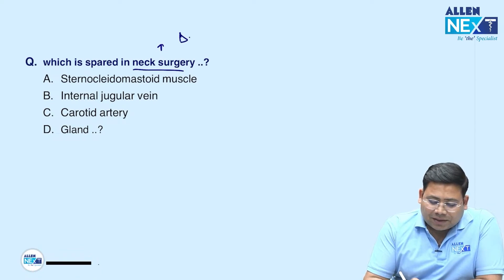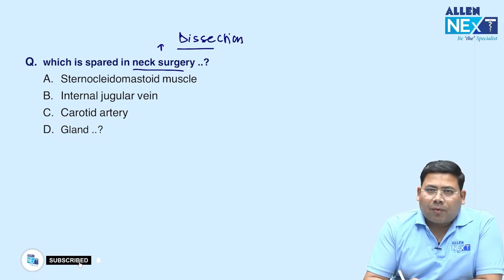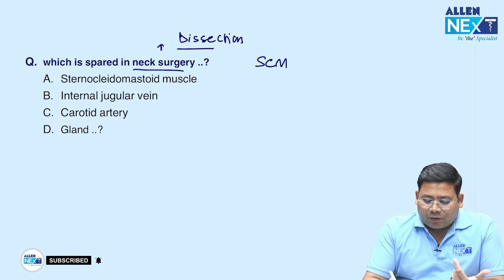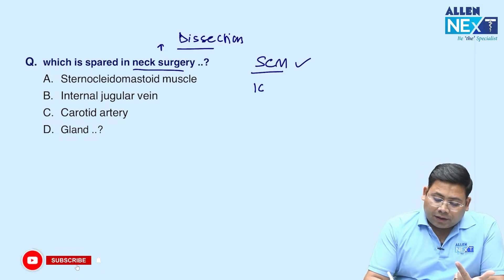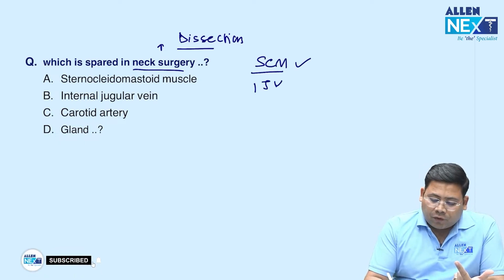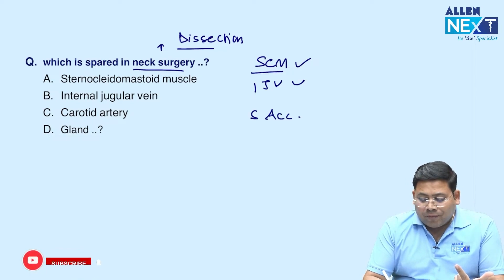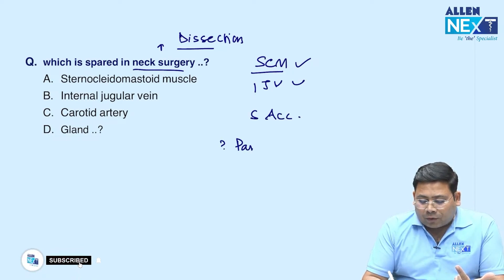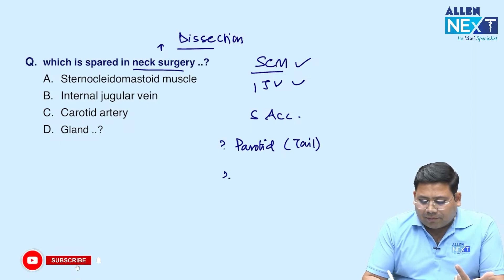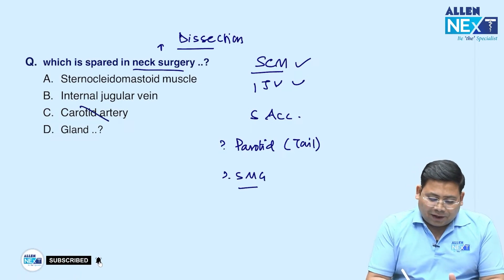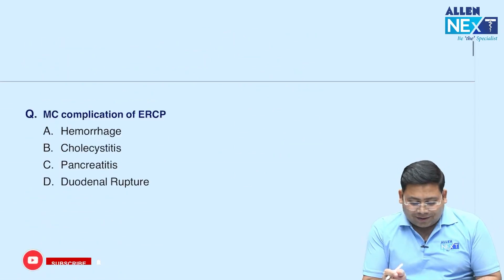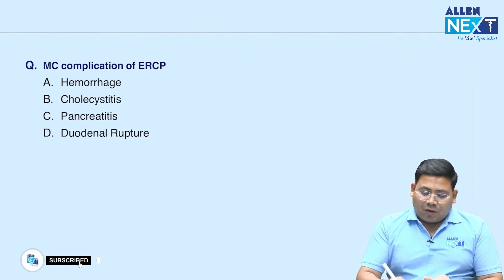Next: which structure is paired in neck surgery? This is about neck dissection — lymph node dissection. We go for the sternocleidomastoid, internal jugular vein, spinal accessory nerve, tail of the parotid, and the submandibular gland. However, the carotid is never taken, so carotid is not the answer in this case.